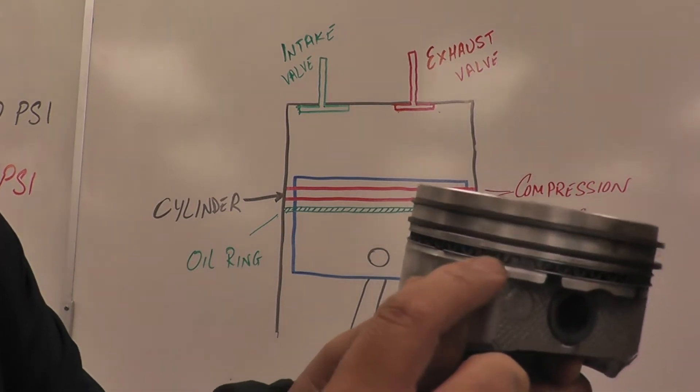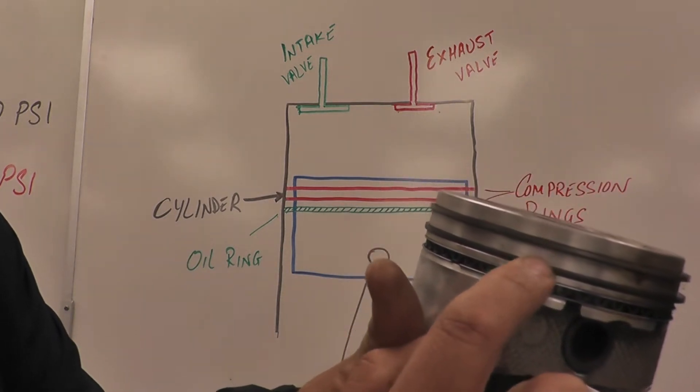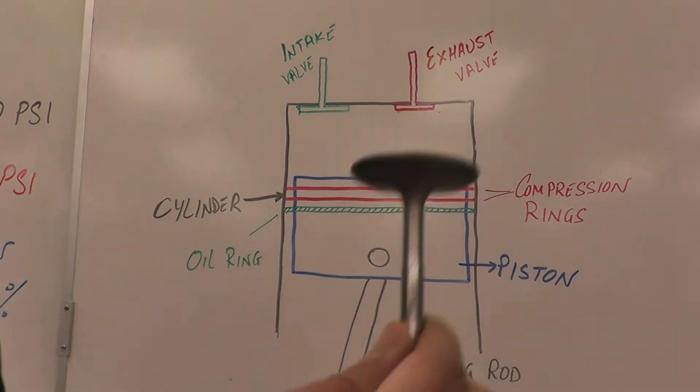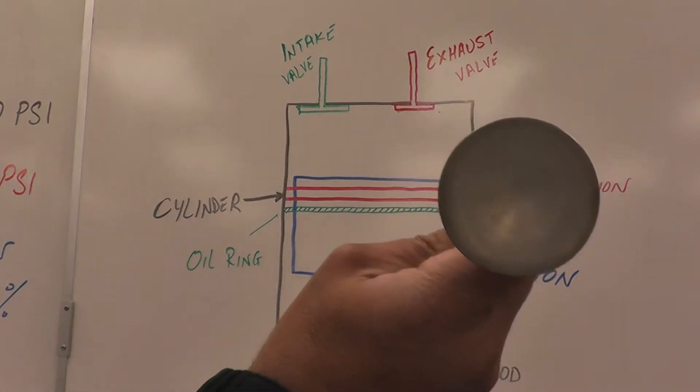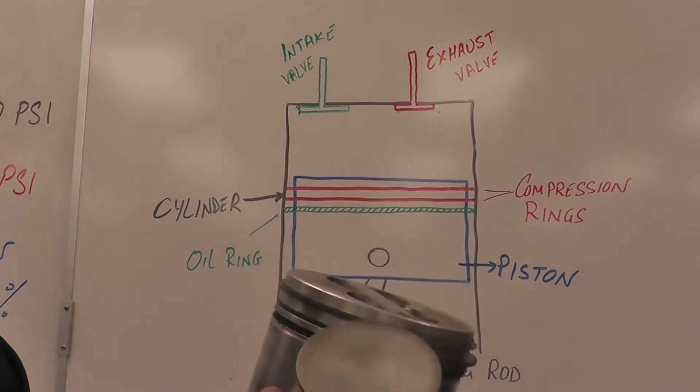The bottom ring is the oil ring, we'll talk about that in a different lesson. But the two main ones are the top two rings. And here's the valve. It's a combination of the valve and the rings that build the compression.